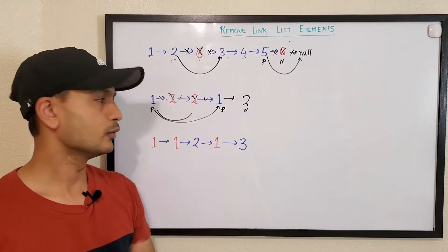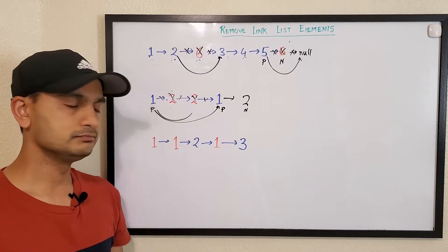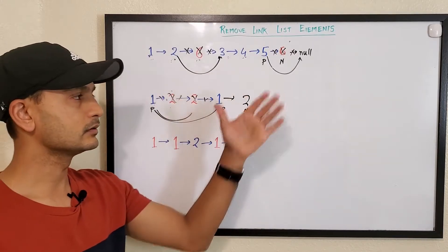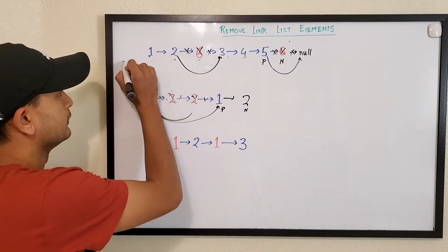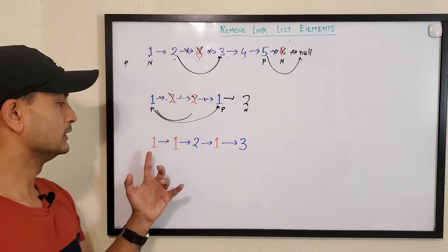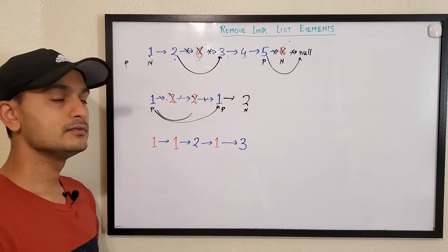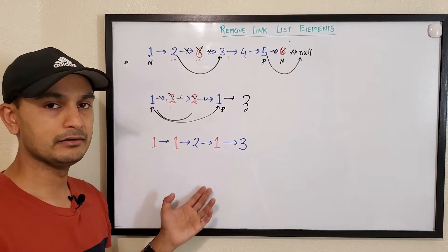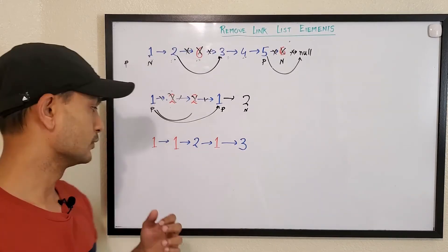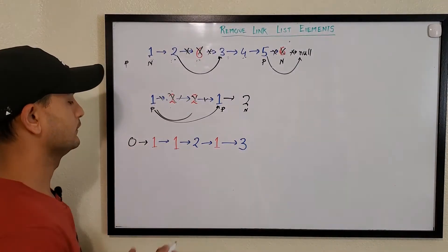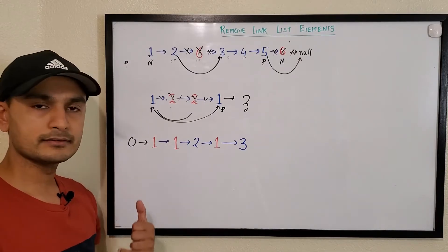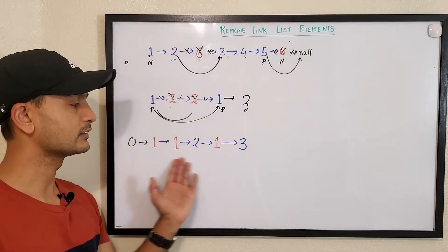In the while loop, previous starts as null and node starts at the head. For the special case where we need to remove the head itself, we create a dummy head node placed before the actual head as a placeholder. When returning, we return dummy.next, which ensures we always have a valid reference even if the original head is removed.